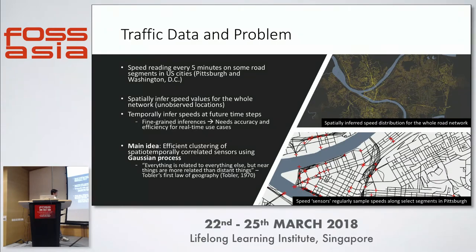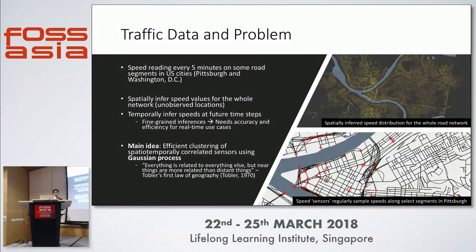For this spatial-temporal inference problem, I employed a method called Gaussian process, which is essentially a nonlinear prediction or interpolation that takes advantage of the spatial correlation property of sensors. Obviously, speed over one road segment is influenced by incoming traffic flow from other branches of the network. Not every edge in the graph has the same influence — there is both a spatial influence and a temporal influence, such as the time of day and sudden events. Gaussian process can model these complex spatially-temporally correlated behaviors.